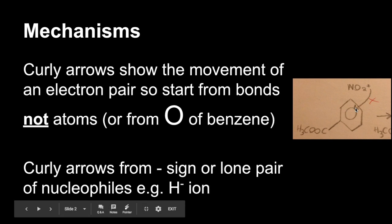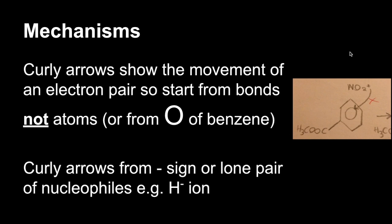So you can see there that that is completely wrong, it's going from the plus into the delocalized electron cloud. And curly arrows must start from either a minus sign or a lone pair of a nucleophile. So example of that, the H minus ion in the reduction of carbonyls mechanism.